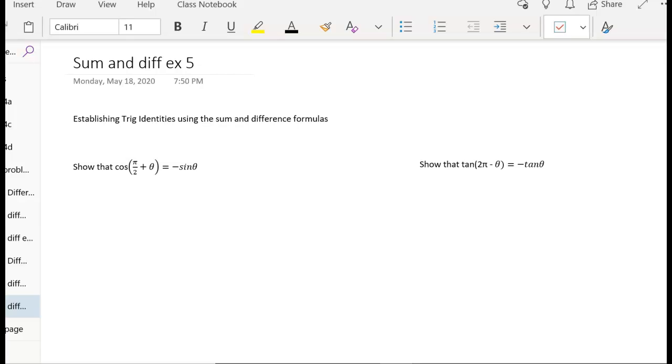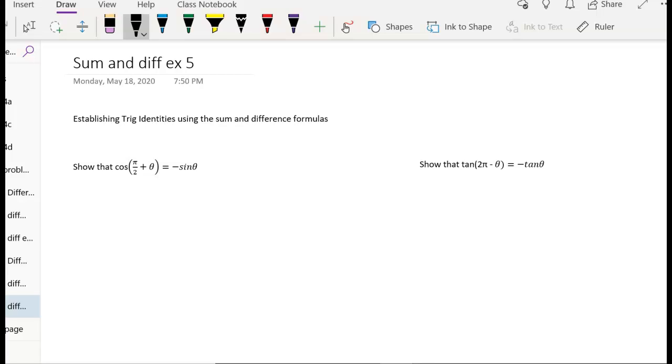We're going to start out by establishing the identity that is the cosine of pi over 2 plus theta, equaling the same thing as the negative sine of theta.